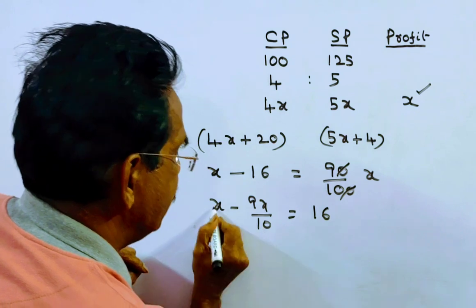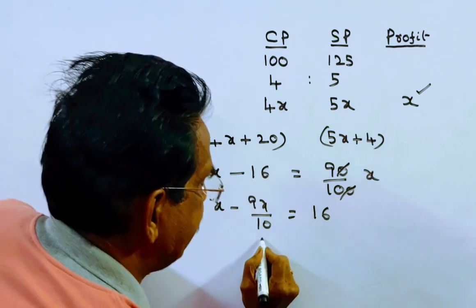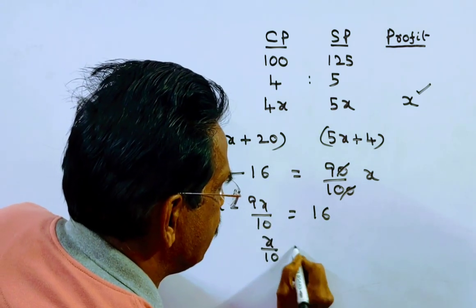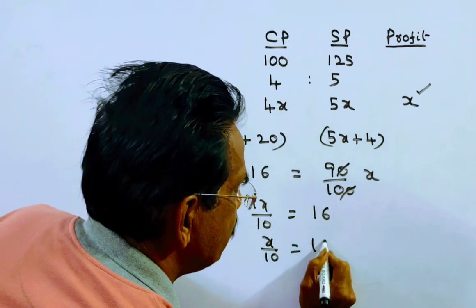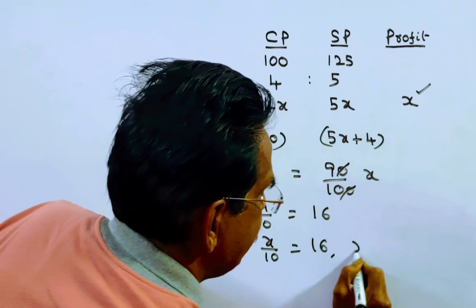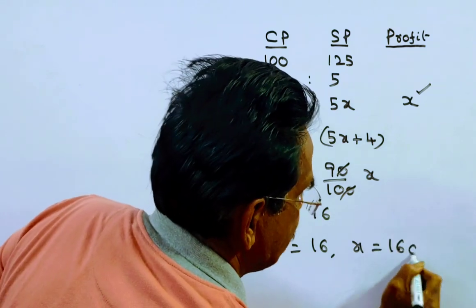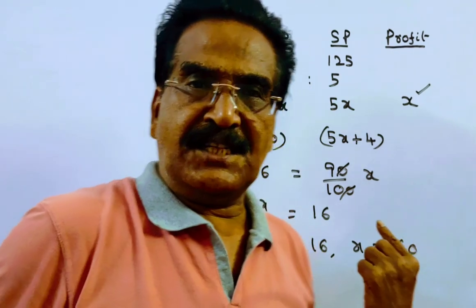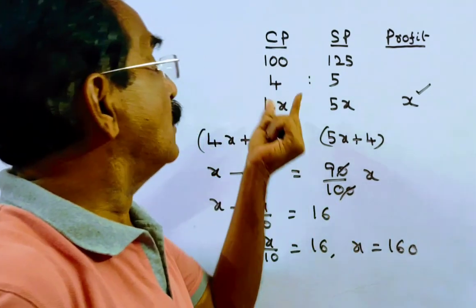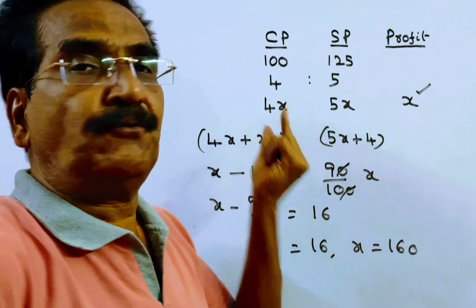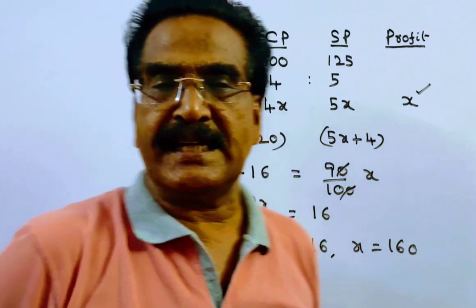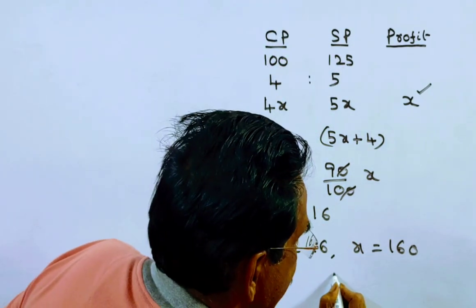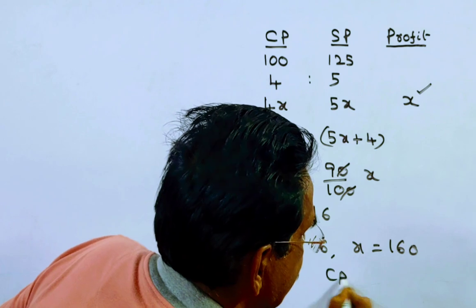Solving: x by 10 equals 16, therefore x equals 160. So the cost price is 4 into 160, which equals 640 rupees. The cost price is 640 rupees.